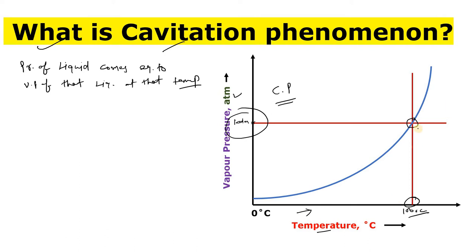Here this is the liquid region and this is the vapor region. Now as you increase the temperature, the boiling will start — this is the point from where boiling starts. The pressure is constant, but as you increase the temperature, boiling occurs.